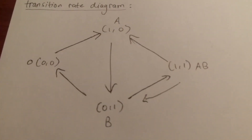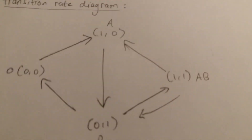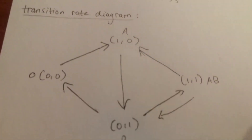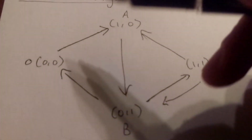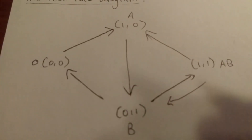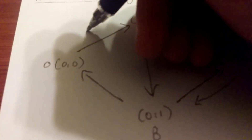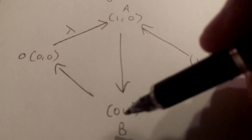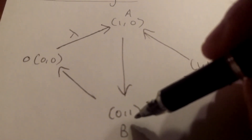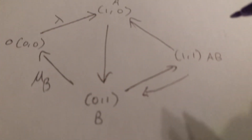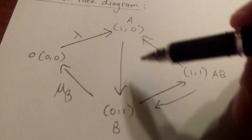We'll identify the rates between each state. The rate from (0,0) to (1,0) represents a customer entering the system, so it's λ. The rate from (0,1) to (0,0) represents the service completion at B when only B is occupied, so it's μ_b. Now looking at the rate from state A to state B — from (1,0) to (0,1).